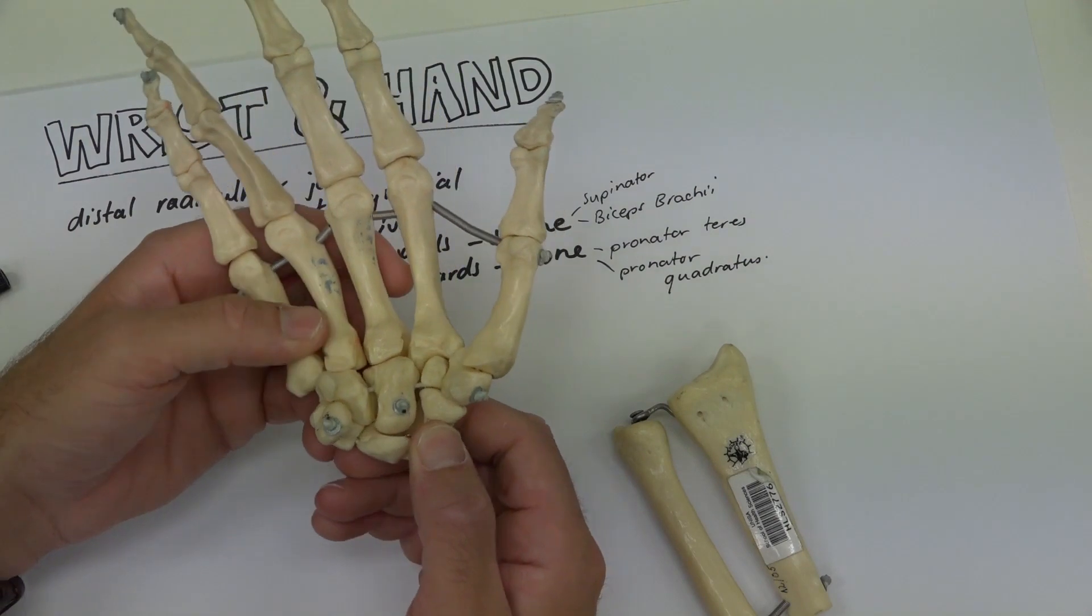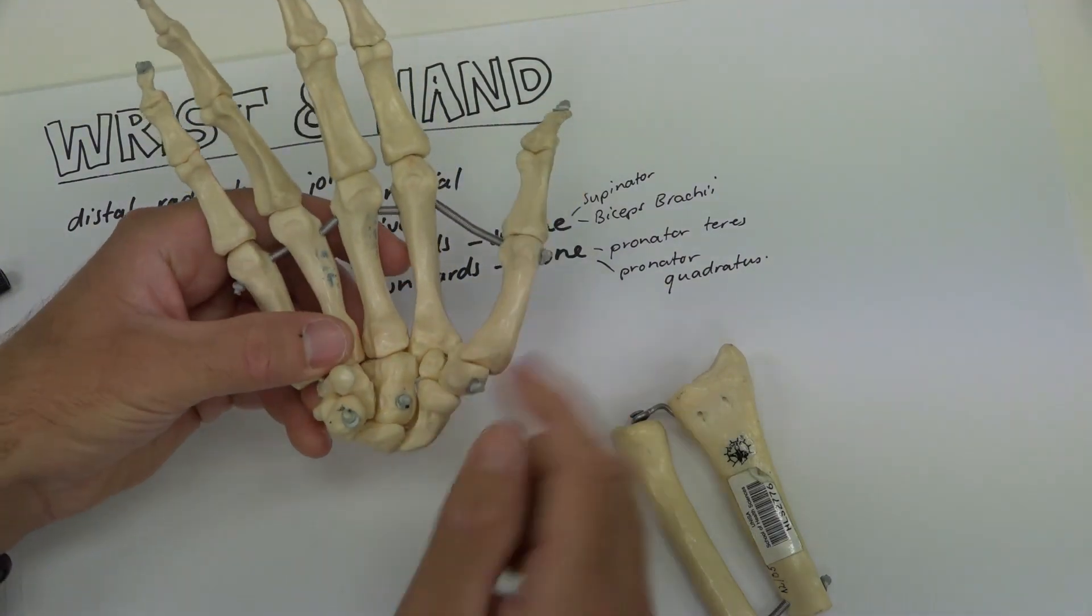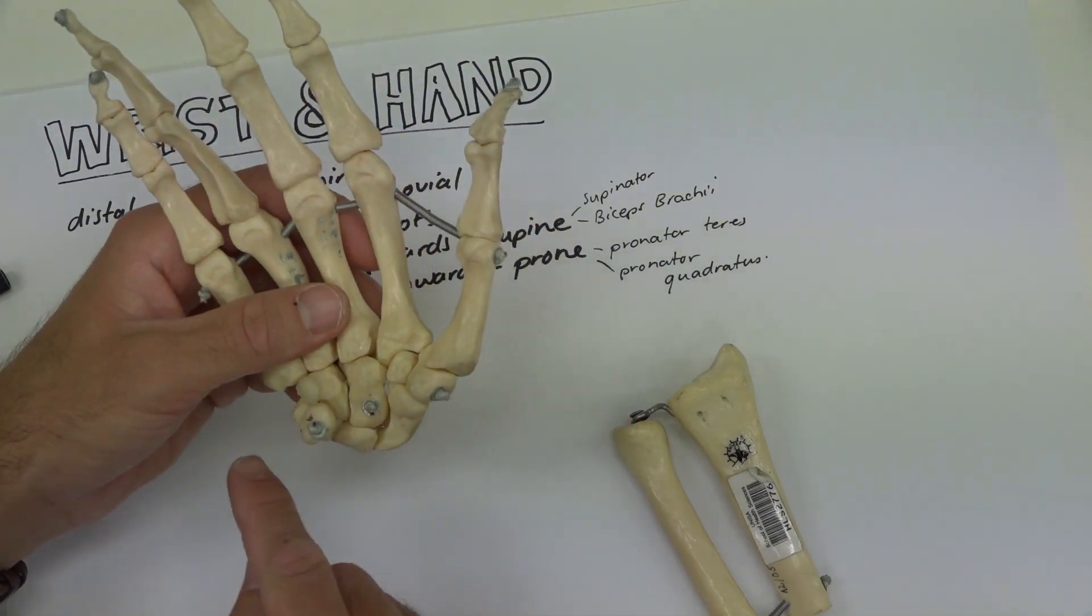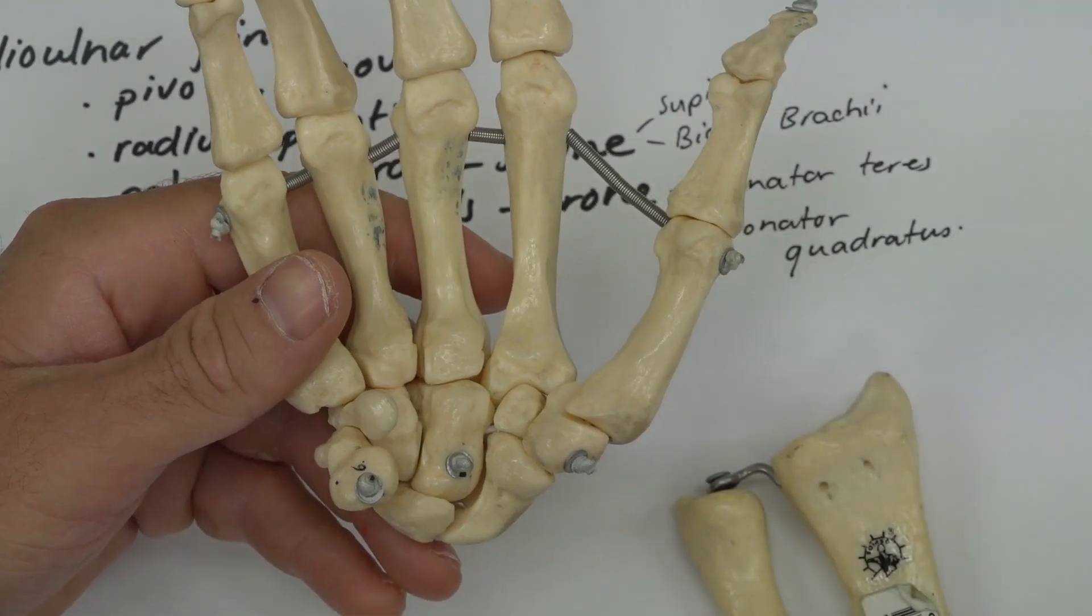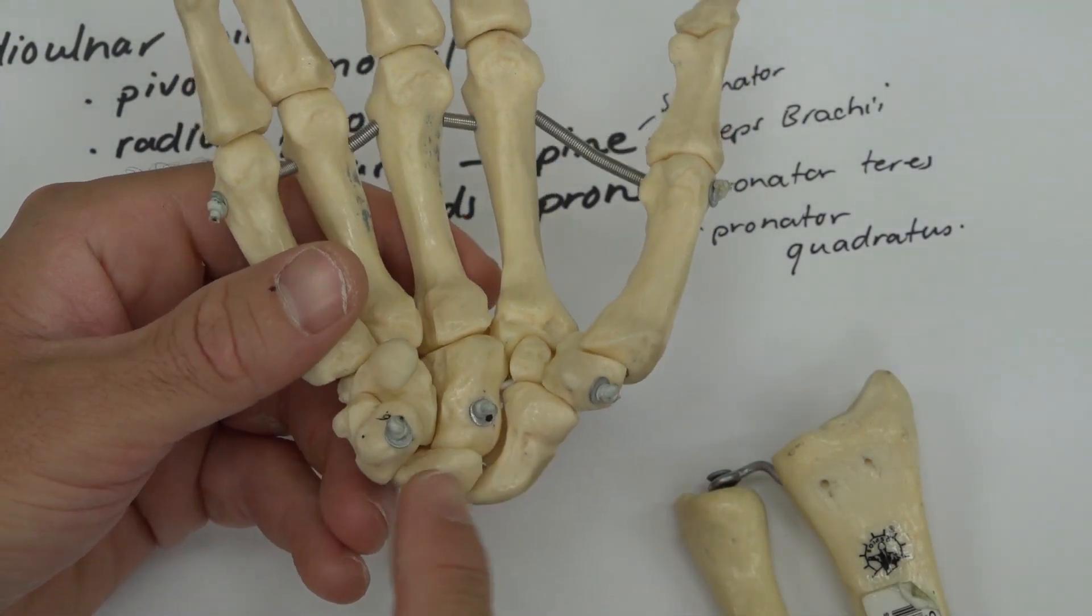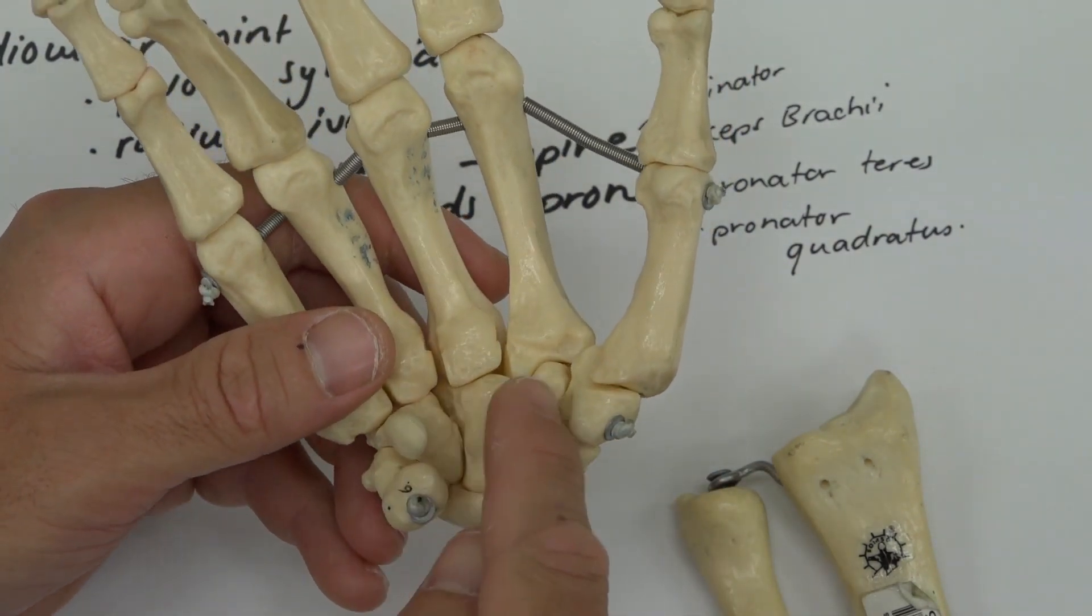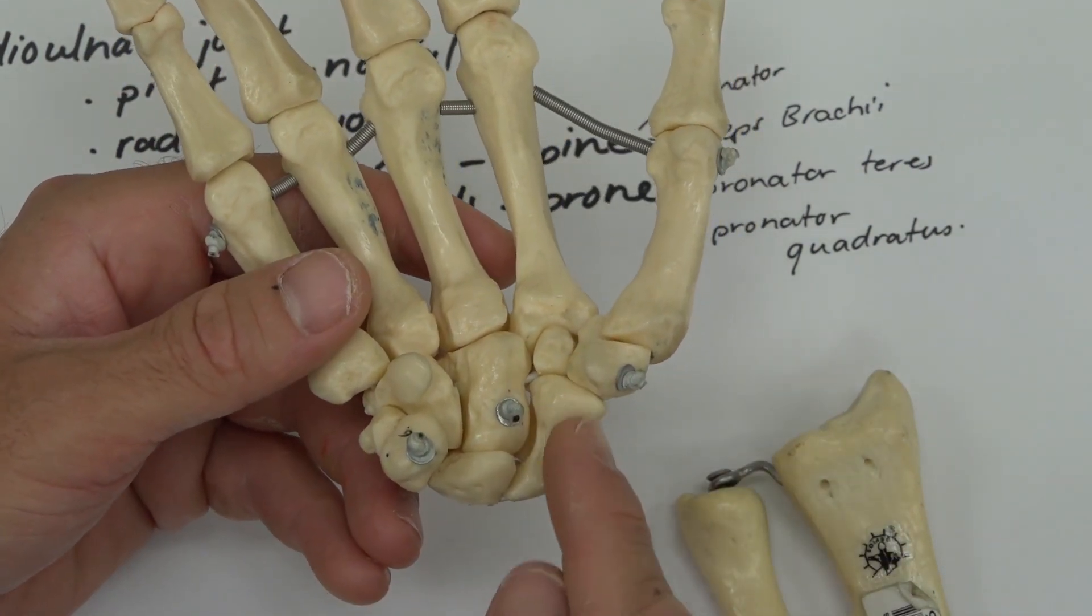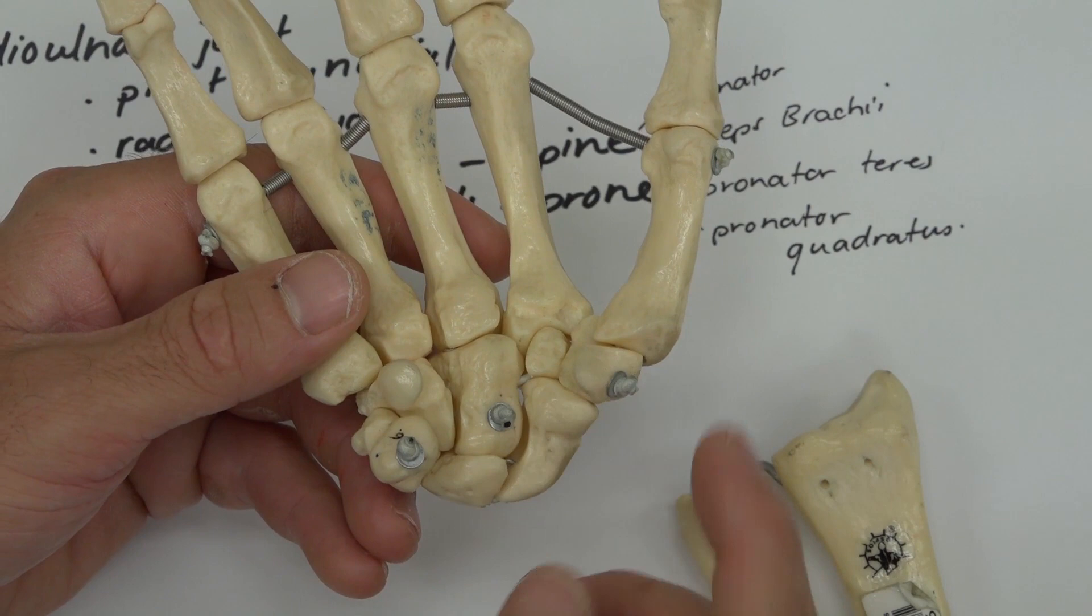If we look at the bones that we can see here, there are eight individual carpal bones and they articulate in two rows. One, two, three, four, five, six, seven, eight individual bones organized in two rows: the proximal row and the distal row.